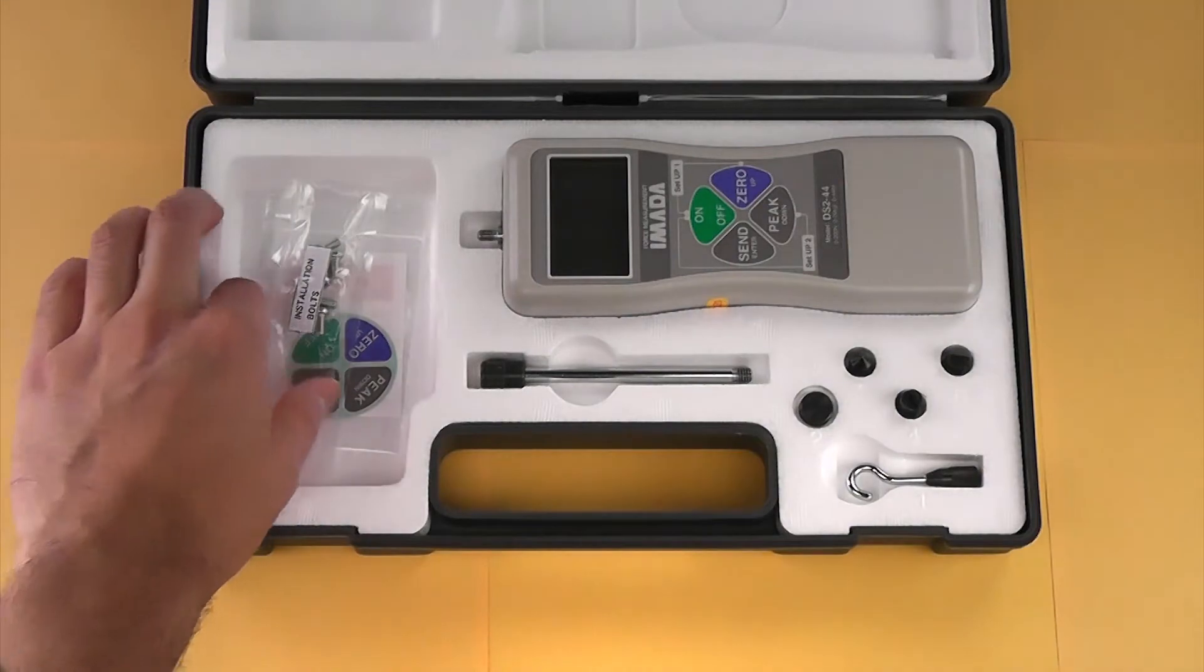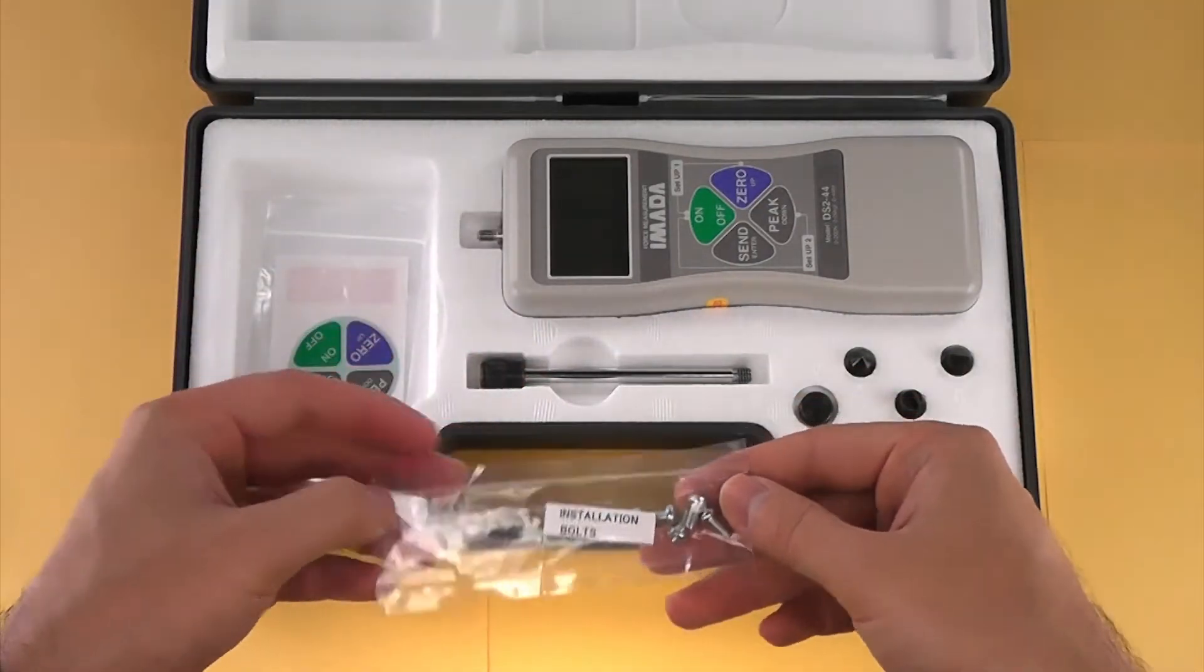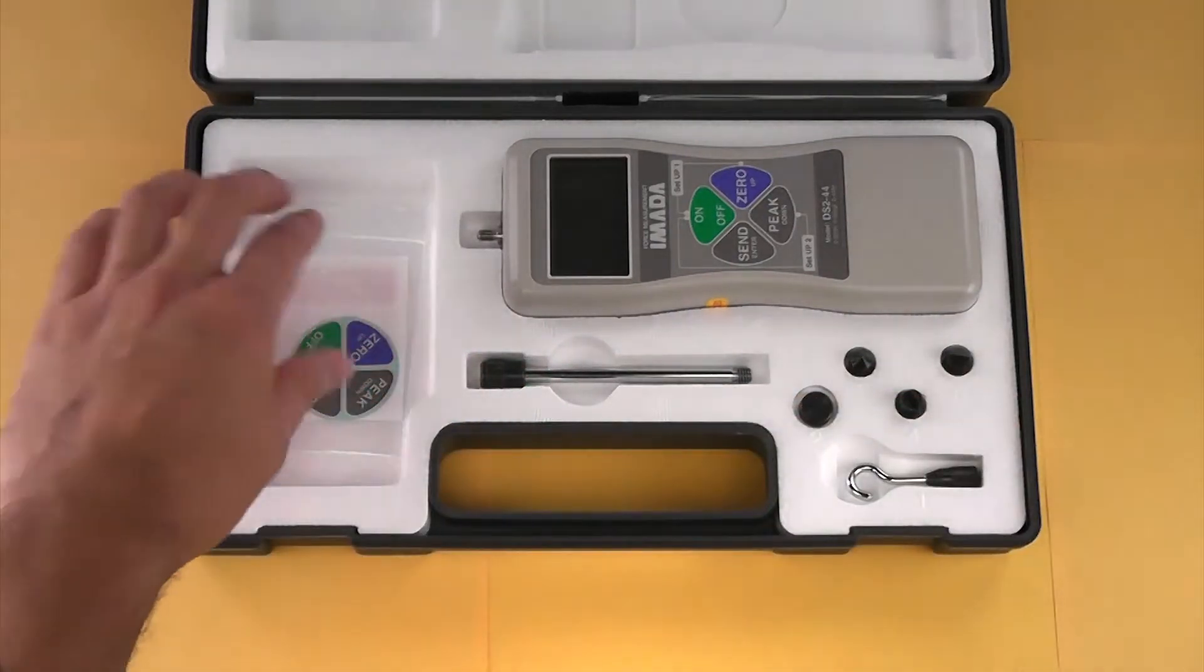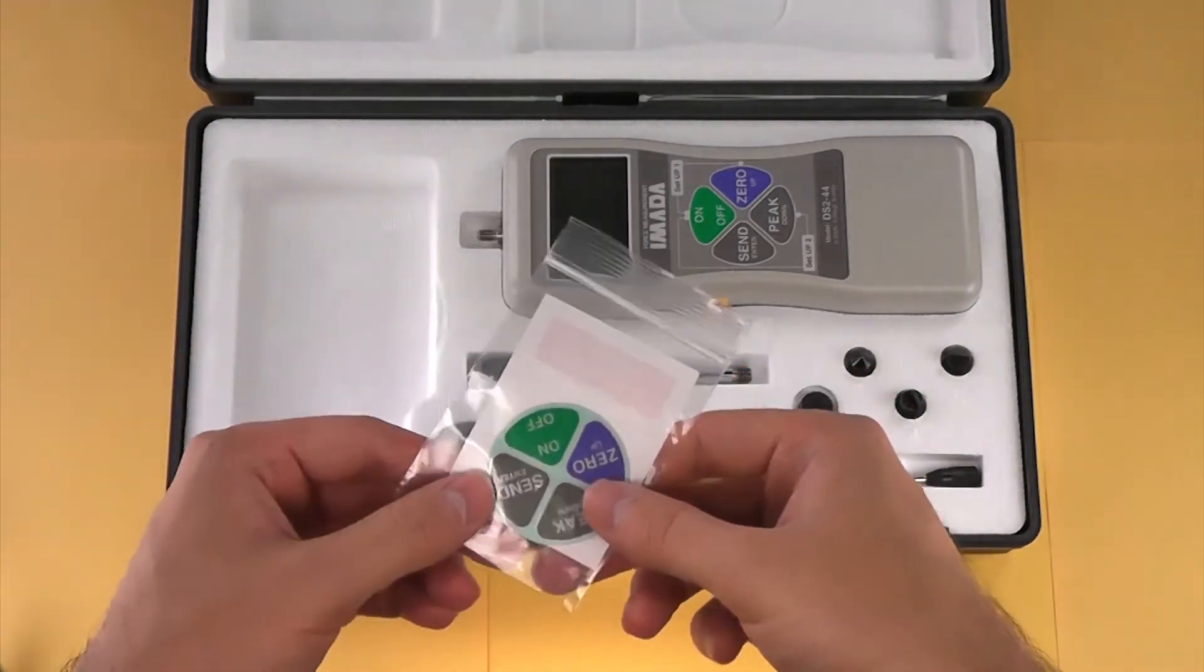The installation bolts for the gauge enable the gauge to be mounted to a test stand. This is the reverse display sticker.